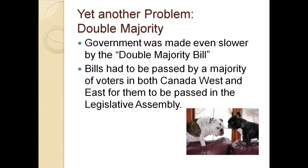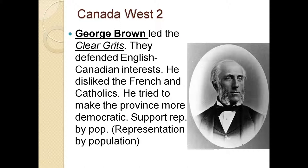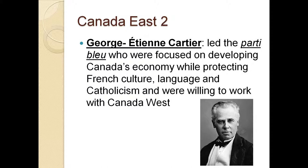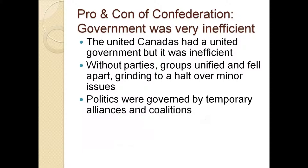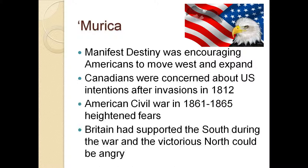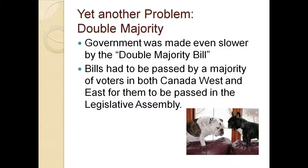That wraps things up for today. Please make sure you know: John A. Macdonald and the Tories, George Brown and the Clear Grits, George-Étienne Cartier and the Parti Bleu and why he's important for French-English cooperation, and Louis-Joseph Papineau. Also know why the railway mattered, and why the United States was a fear. Thank you very much — if you have questions, bring them to class. Have a lovely evening and good luck studying for your midterms.